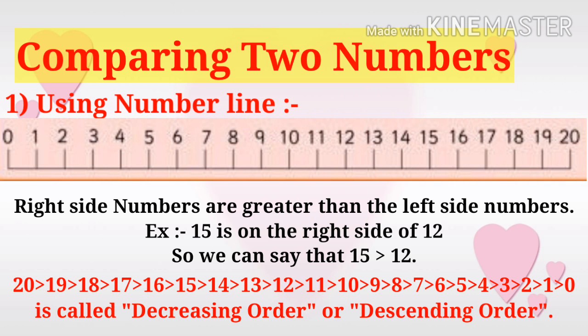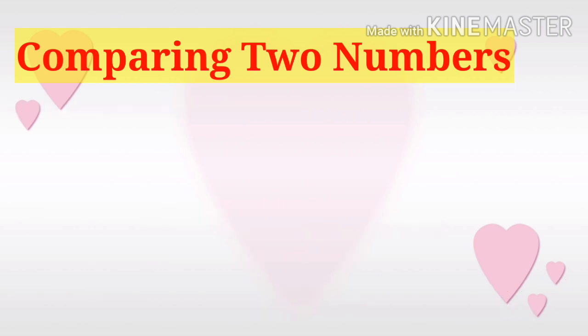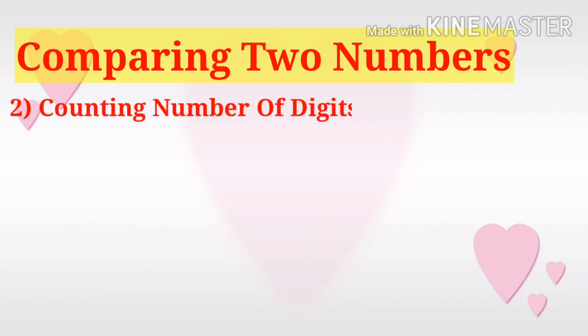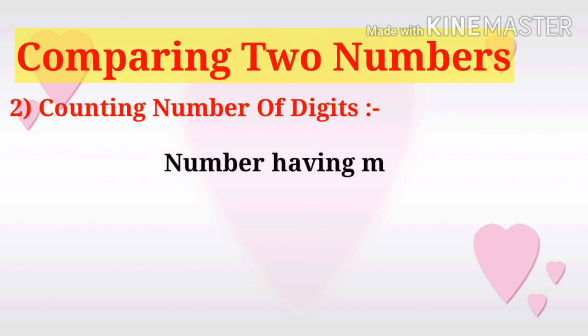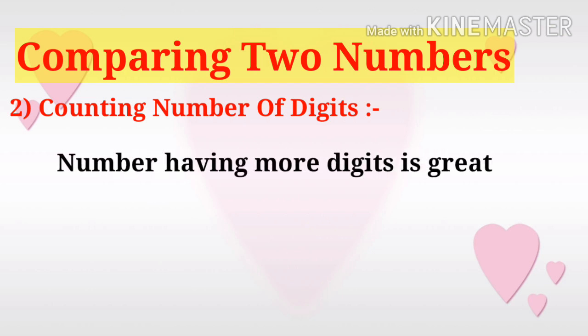This continues down to greater than 0. This is called decreasing order or descending order — that is, numbers from big to small. We can also compare two numbers by counting the number of digits in each number.